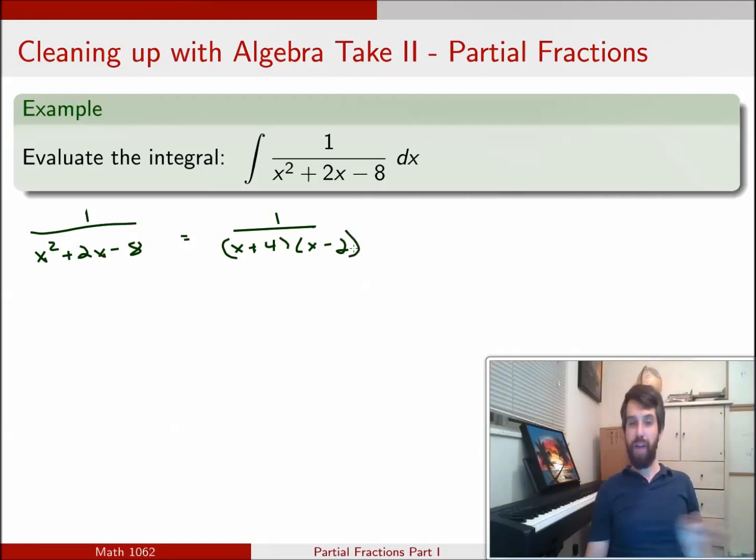So I can do a little bit of factoring. Now I'm still not helped. If I have that as the integrand, I still don't know what u to do or how to deal with this. But here's what I'm going to aim to do. I'm going to say, can I make this equal to some number A divided by the first of these factors plus some other number B divided by the second of these two factors.